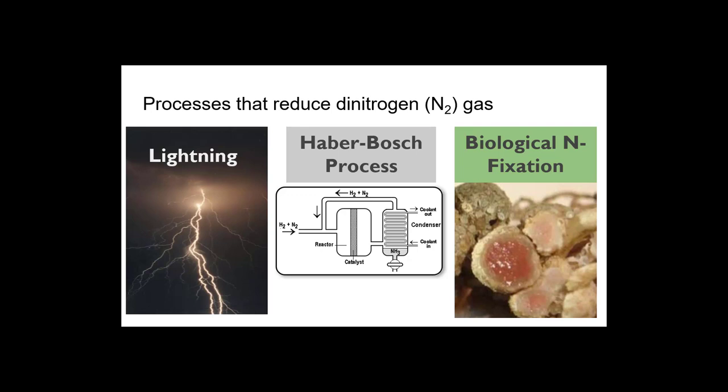There are three processes that can reduce this dinitrogen gas into forms that we can use. The first of these is lightning. The second is the Haber-Bosch process that produces industrial fertilizers. And then there's biological nitrogen fixation that my research program focuses on. Biological nitrogen fixation is really an incredible process that is able to break this really strong bond between nitrogen atoms at ambient temperatures and pressures. The Haber-Bosch process uses 400 degrees and many atmospheres and huge amounts of energy to conduct this reaction. It's really incredible that organisms can do this.